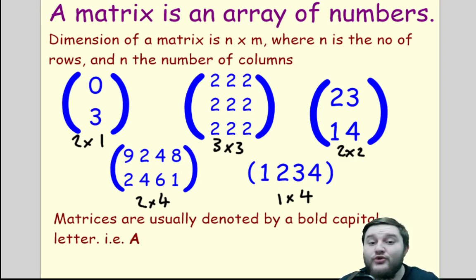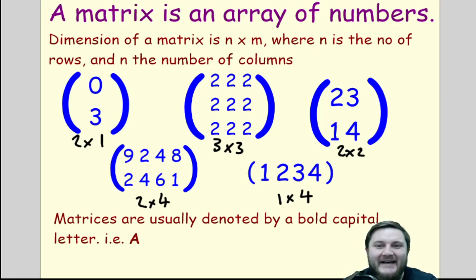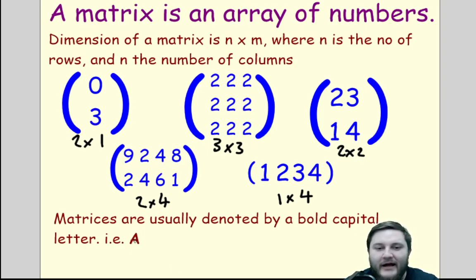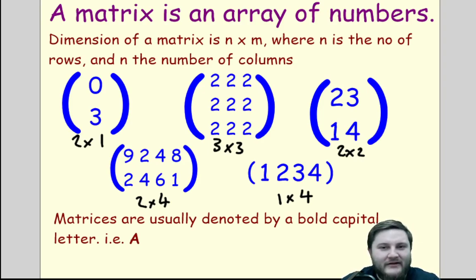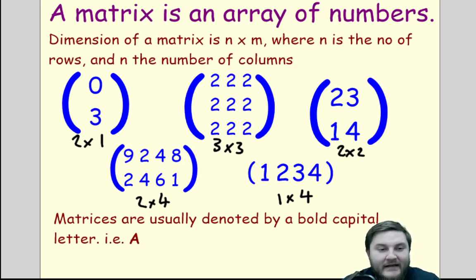Matrices are usually denoted by a bold capital letter — so for example, that would be matrix A. This is very common at degree-level maths, where matrices are a huge part of the first few years of learning abstract algebra. The bold letter notation is very common at a high level. Obviously, writing a bold letter by hand is quite difficult, so some mathematicians use different notation when handwritten, but if it's printed it will typically be a bold capital letter. The numbers in the matrix are called elements — just numbers or information compacted into this arrangement.